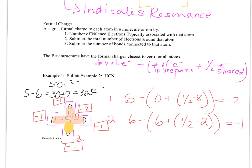Correcting my calculation: sulfur is positive 2, not negative 2 — 6 minus 4 is positive 2. So we have 4 oxygens each at negative 1, giving negative 4, plus the sulfur's positive 2, for a total formal charge of negative 2. That matches the 2- charge of the sulfate ion.